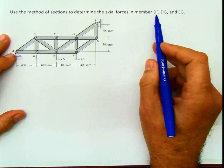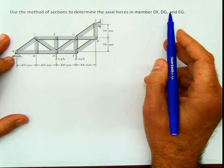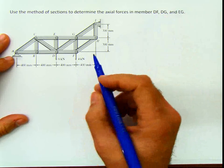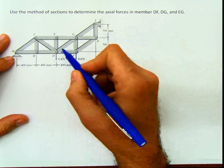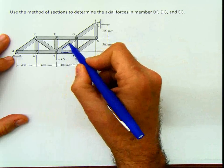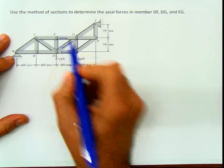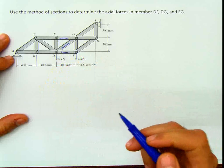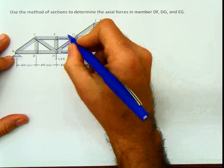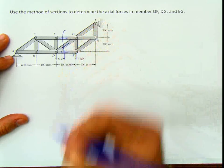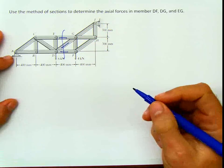In this case, if we have to calculate the members DF, DG, and EG — this one, this one, and this one — it's obvious that by just doing a section here, you can get the three bars. So that's what we have to do.